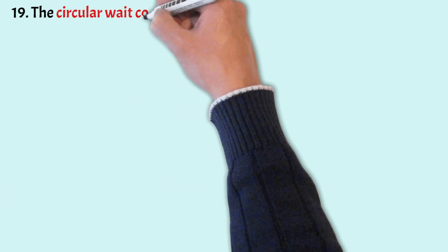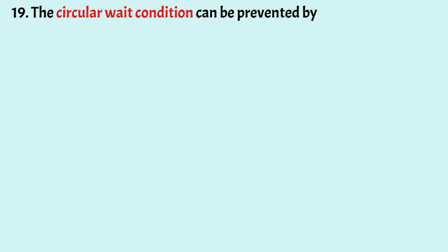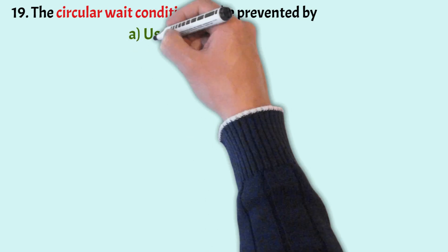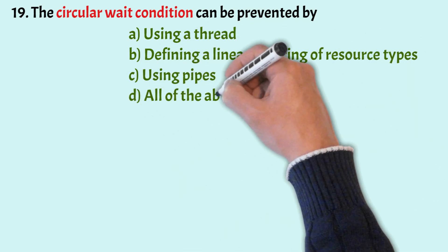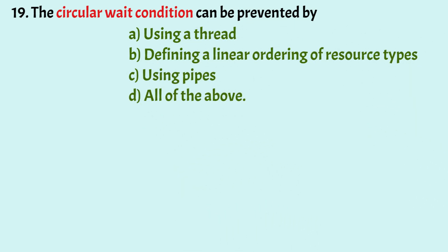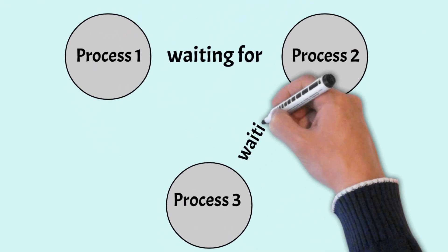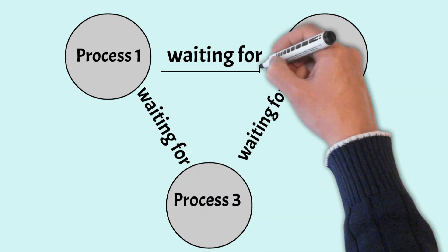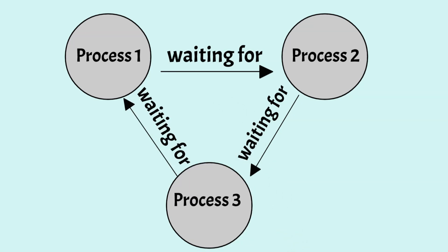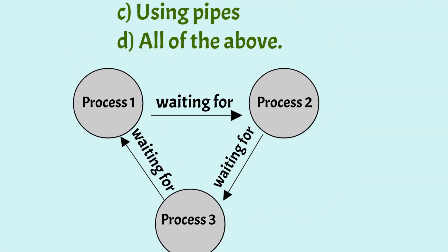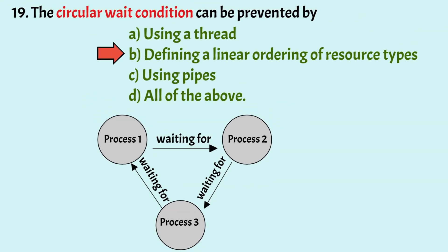The circular wait condition can be prevented by: using a thread, defining a linear ordering of resource types, using pipes, or all of the above. The correct answer is Option B — defining a linear ordering of resource types. This means all resources must be numbered, and a process has to access resources in an increasing or decreasing order.